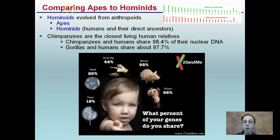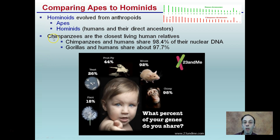Now we're comparing apes to hominids. Hominids evolved from these earlier groups, and apes, hominids, and humans are the direct descendants — or rather the direct ancestors — from which we are directly descended.